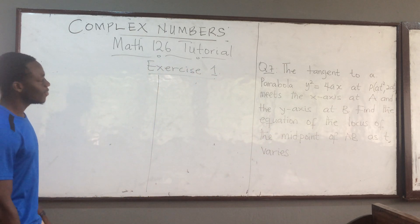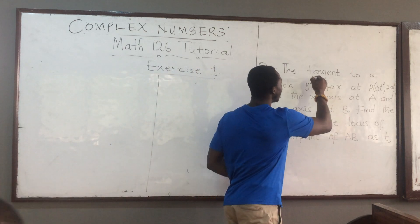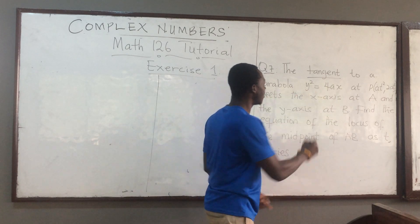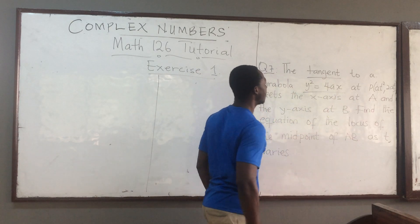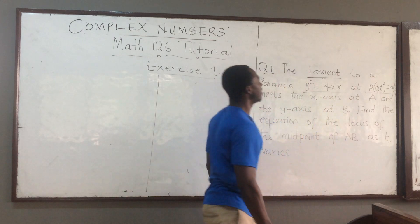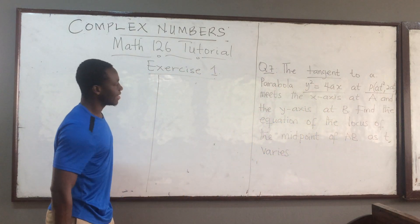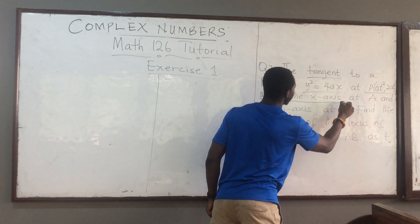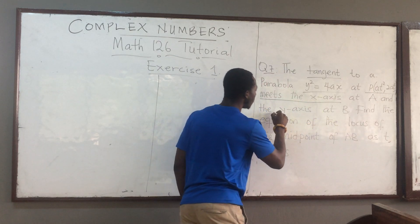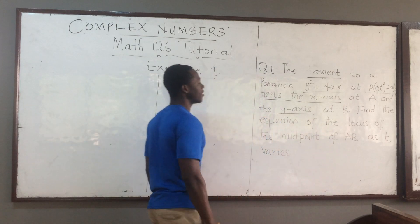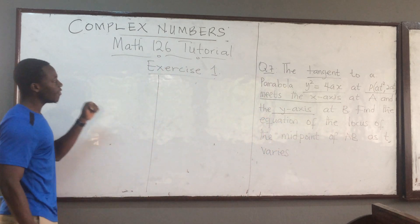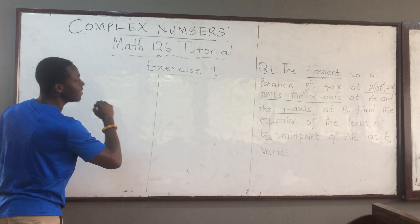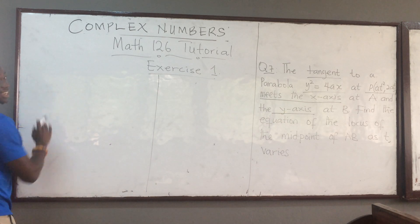Find the equation of the locus of the midpoint of AB as t varies. First of all, what do we know? The key word is tangent — tangent to a parabola. We identify the point at which we have a tangent, and we know the tangent meets the x-axis at point A and the y-axis at point B. So we have to write out this information. How do we find the equation of the tangent?